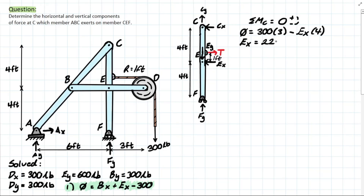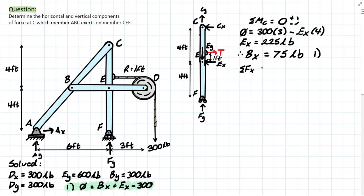Now that we have Ex = 225 pounds, we can go back to our open equation from member BED. Plugging Ex into that equation gives us Bx = 75 pounds. Next, we can look at ΣFx or ΣFy in CEF — let's start with ΣFx.